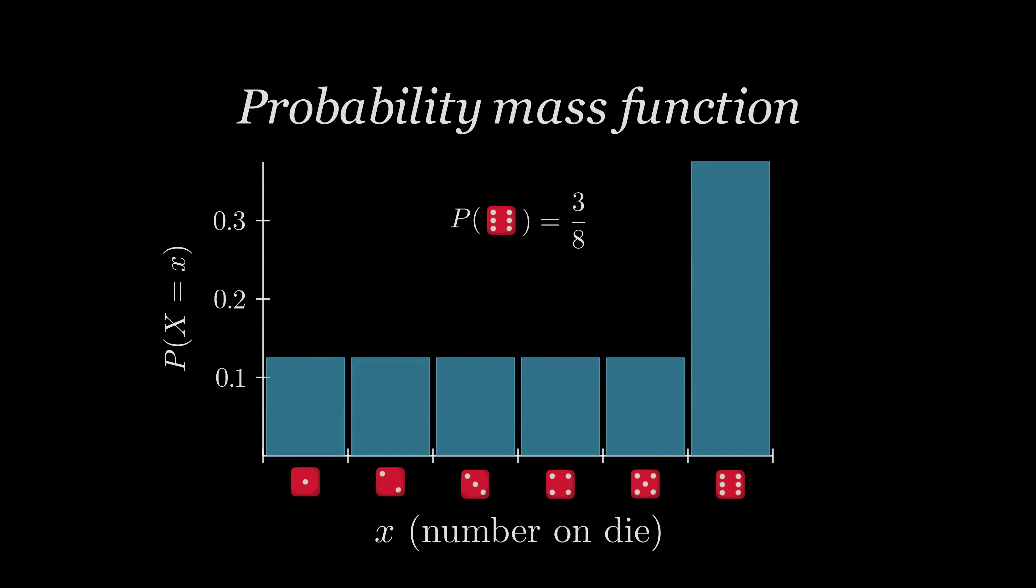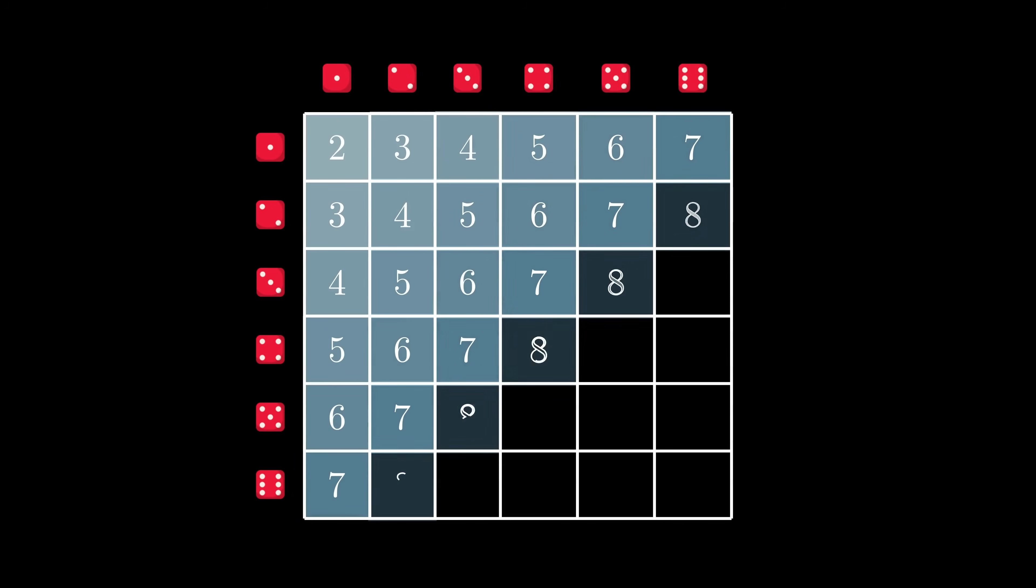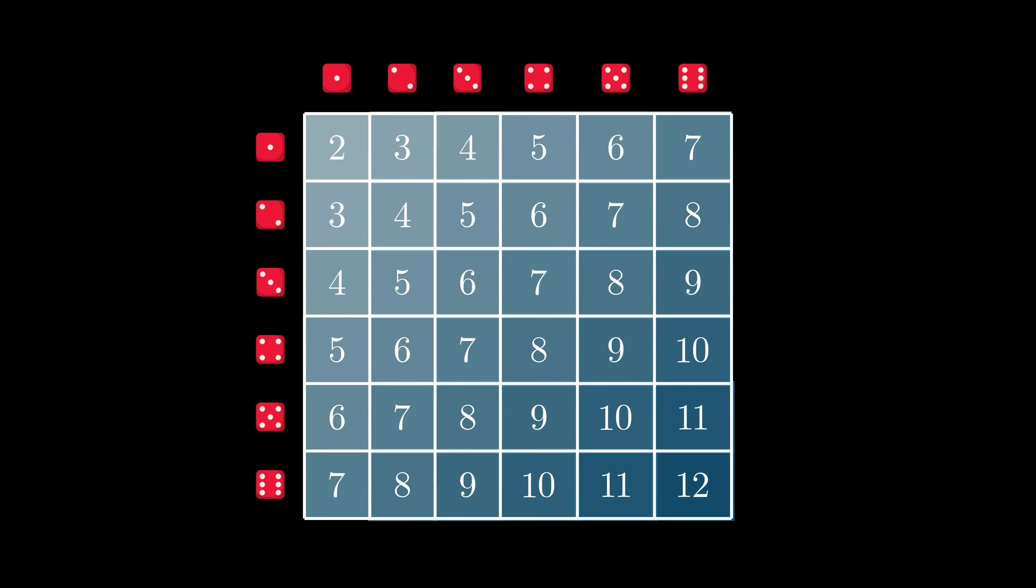Now, imagine rolling a fair die two times in a row. Because the two dice rolls are independent of each other, there are 6 times 6, or 36 distinct possible outcomes. But if we only care about the sum of the two dice rolls, then we only have 11 distinct possible outcomes, the sums 2 through 12, because most of these sums can occur in more than one way.